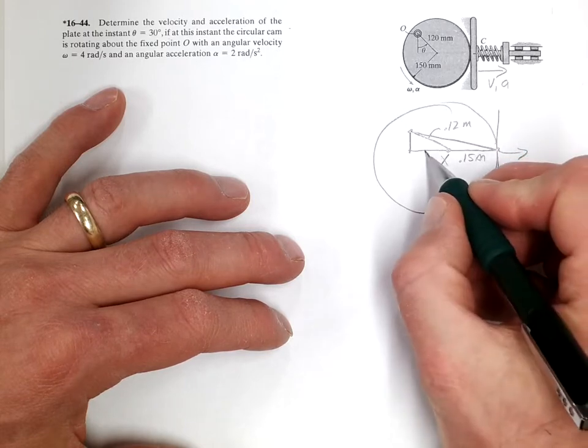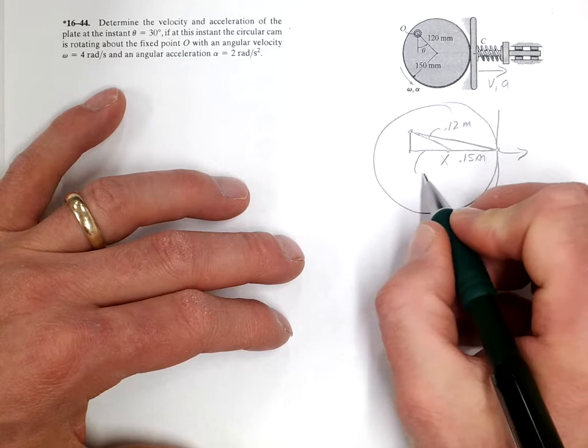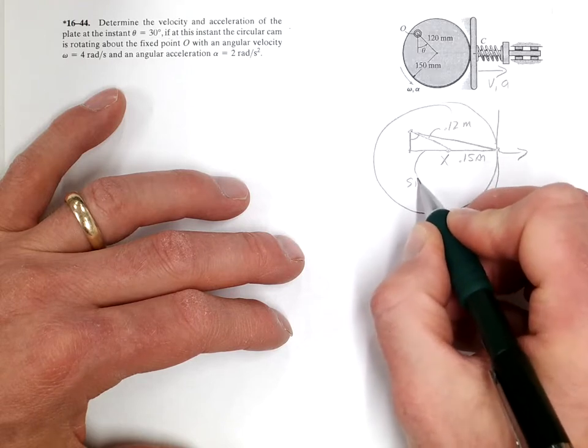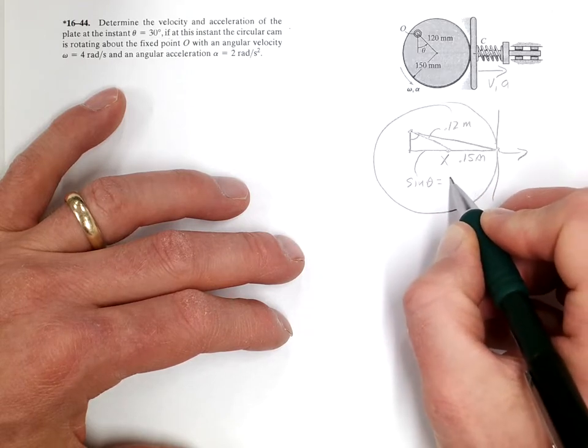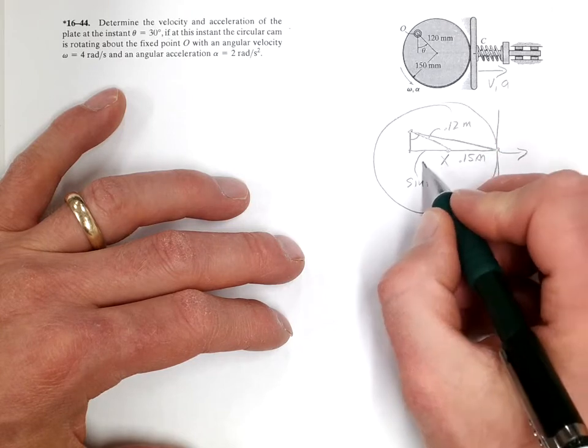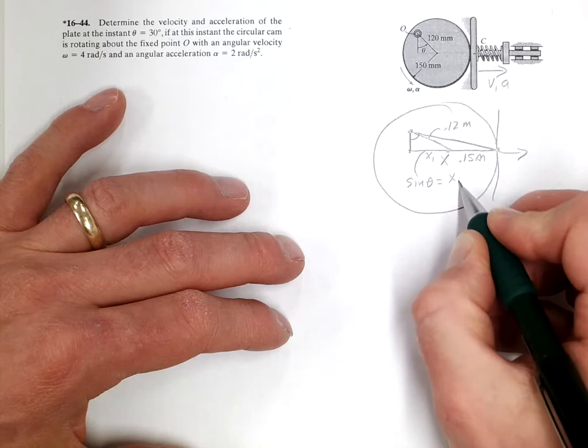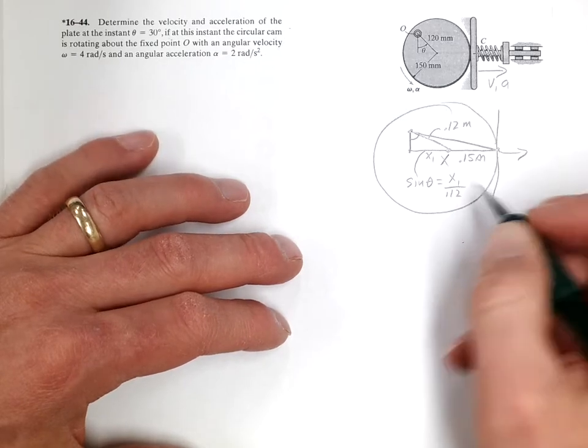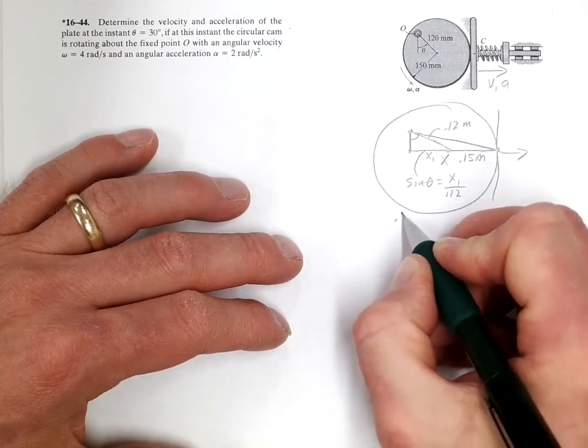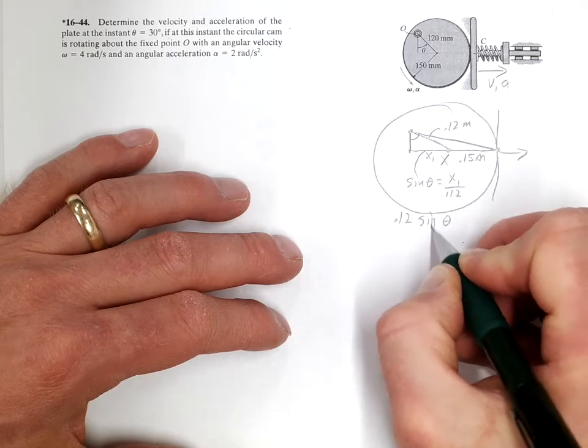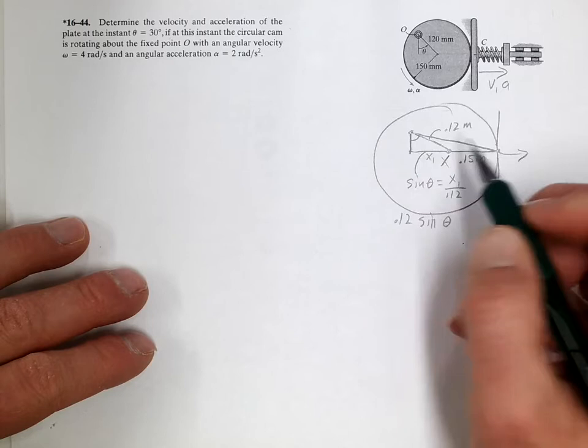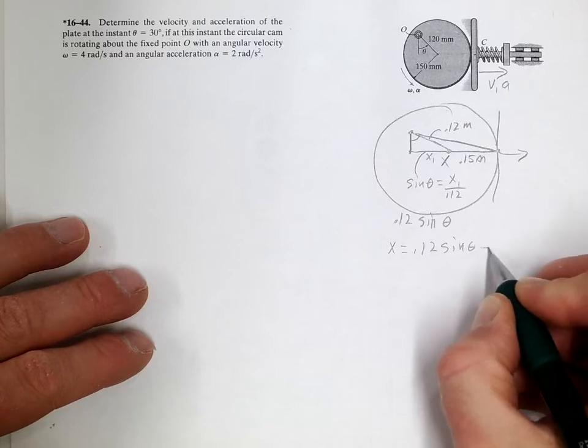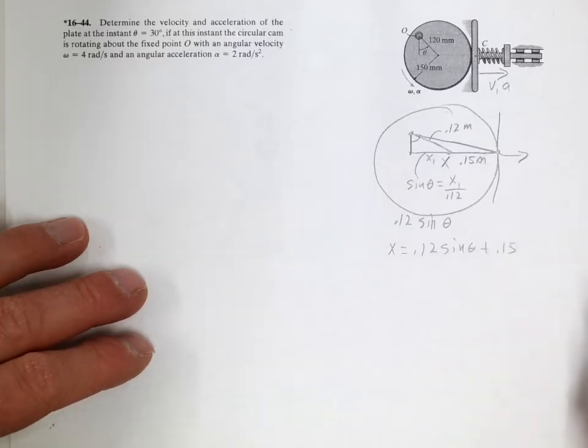So this here is going to be the sine of theta is equal to this distance. Let's call that X1, X1 over 0.12, opposite over hypotenuse. So that would be 0.12 sine theta. So this whole side here, X, is equal to 0.12 sine theta plus 0.15.